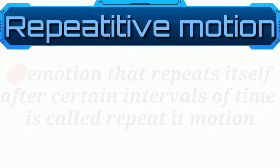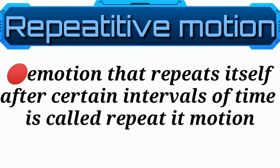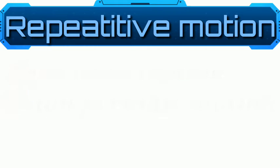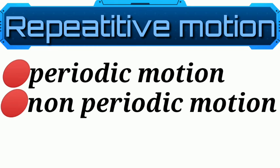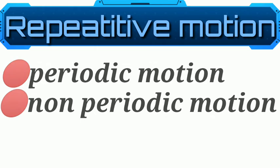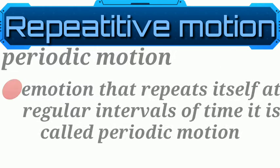Repetitive motion: a motion that repeats itself at certain intervals of time is called repetitive motion. There are two types of repetitive motion: periodic and non-periodic.